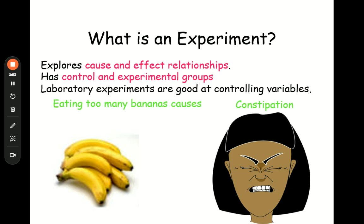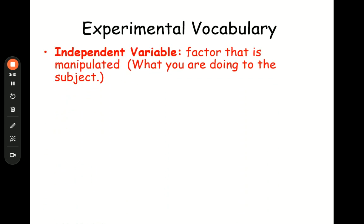Let's take this example I'm going to use a lot in this video: does eating too many bananas cause constipation? You would need to do an experiment. When you do an experiment, you are going to split a bunch of people into two groups. You're going to do something to one of the groups and not do that thing to the other group. That thing you do to one group is called the independent variable.